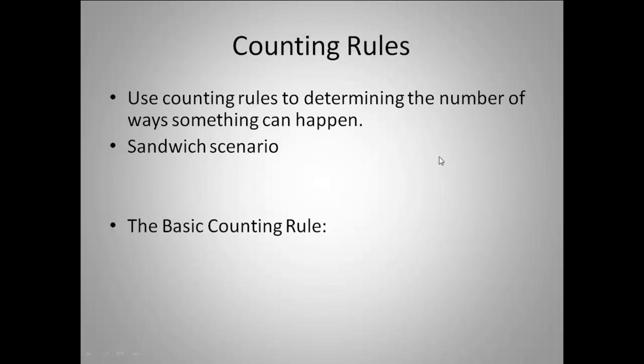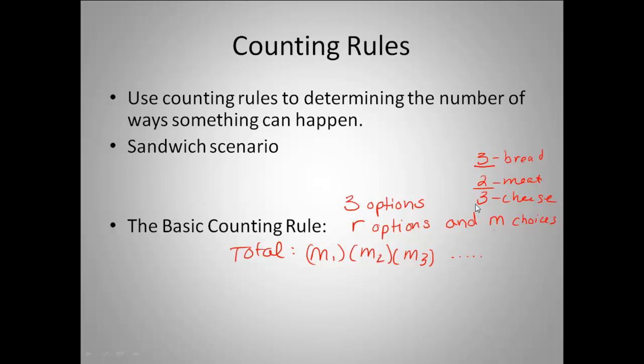This is called the basic counting rule. There's not really a formula, but it's more of an explanation. If you have r options, and each option has m choices, to find your total number of choices, you would take your m1 times your m2 times your m3, and so on. For us, we had three options for our sandwiches. The first one had three types of bread, two choices for the meat, and three choices for the cheese. To find our total number of options, we had to take 3 times 2 times 3.